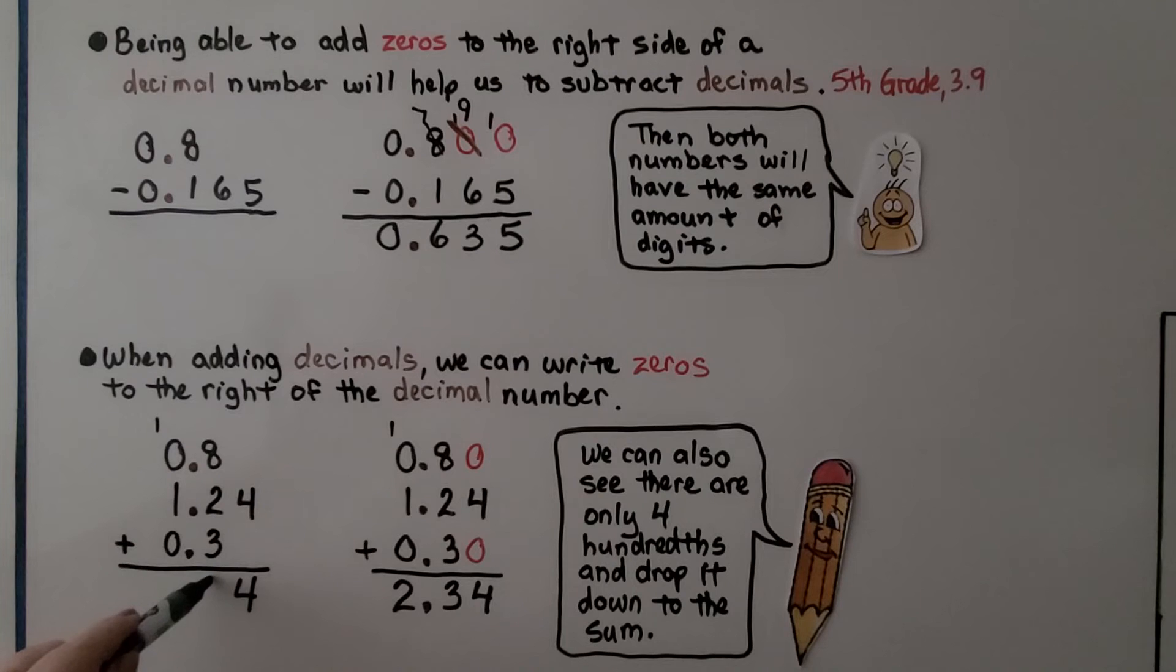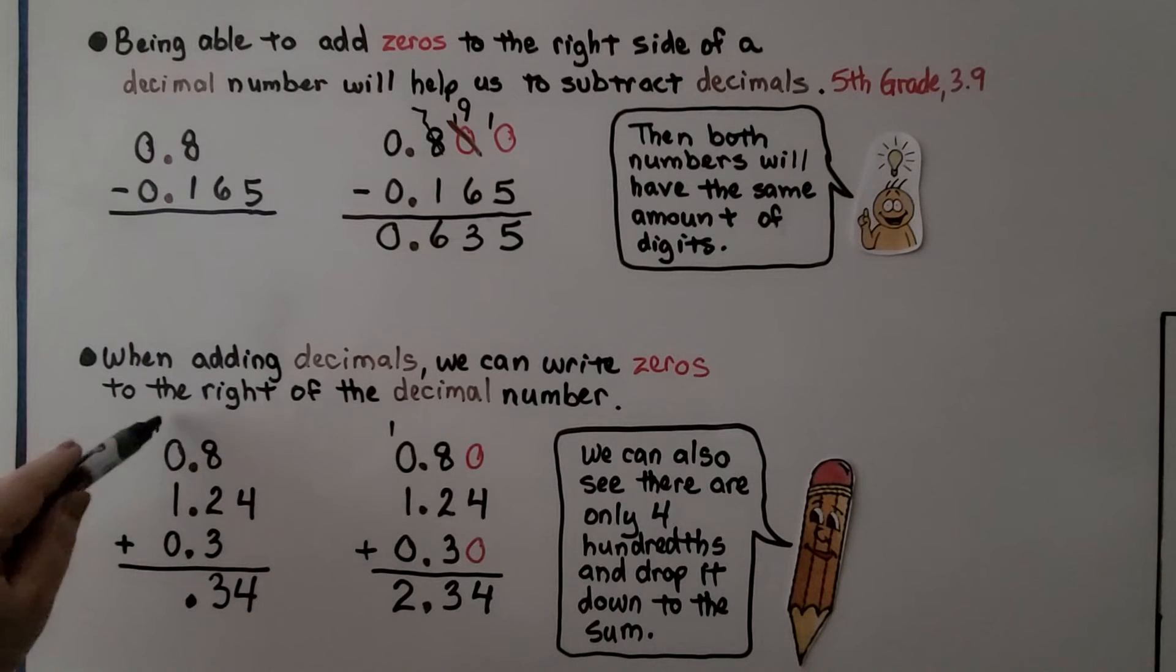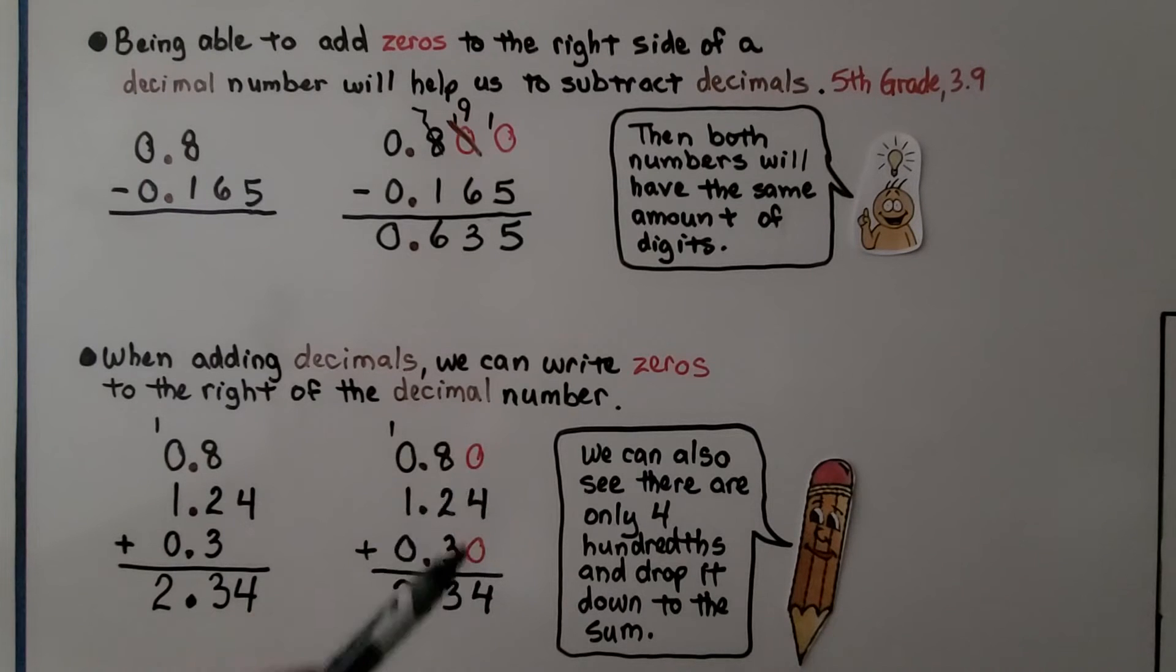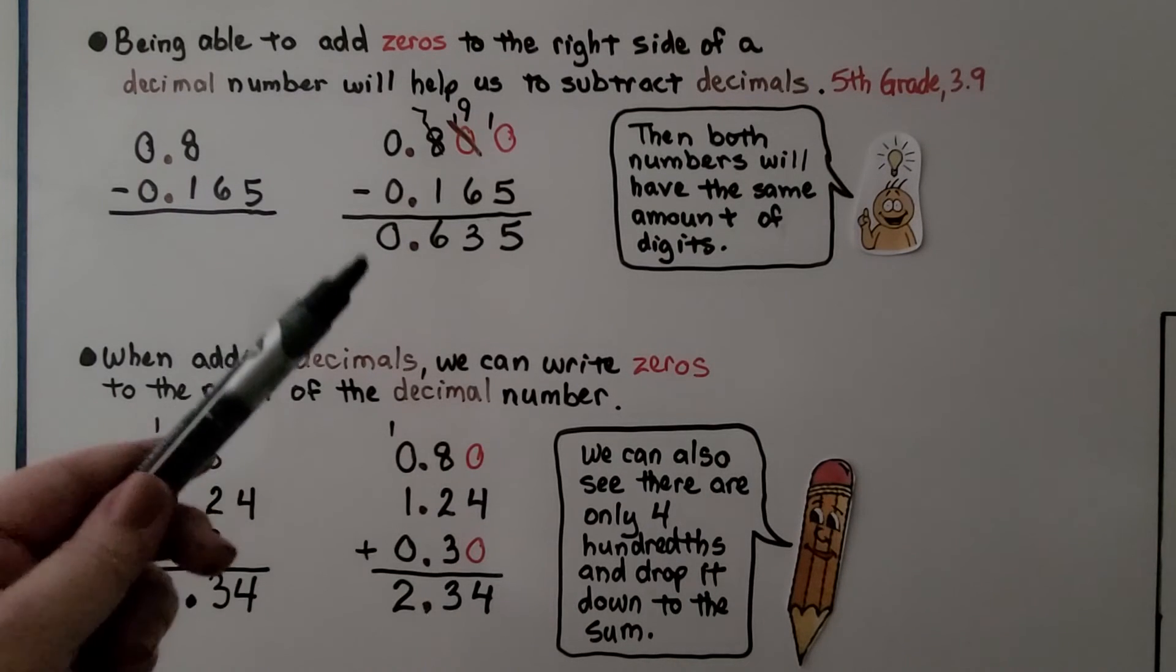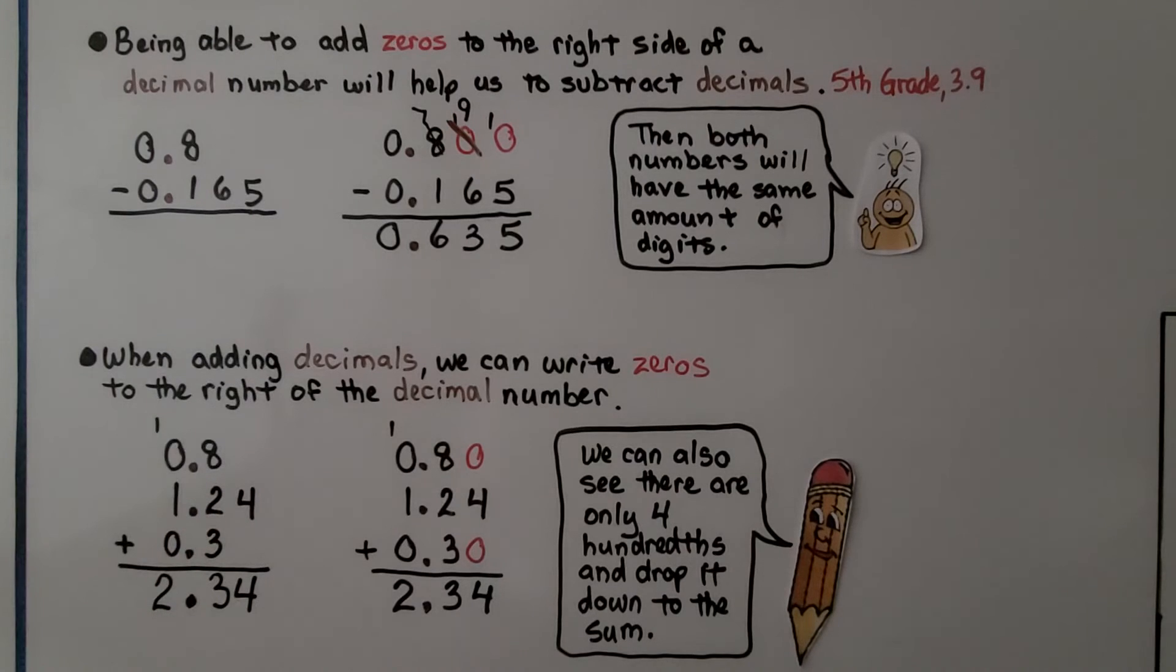There's 13 of those. So we regroup. We bring our decimal point down. And 1 and 1 is 2. So either way, when we're adding, we can just add or we can add some zeros as placeholders. But when we subtract, it is very helpful to use zeros as placeholders.